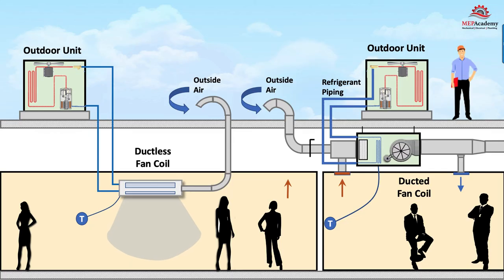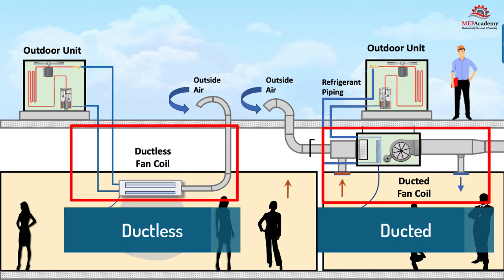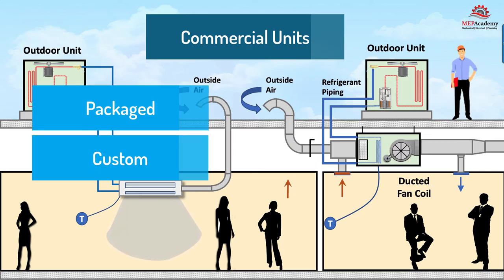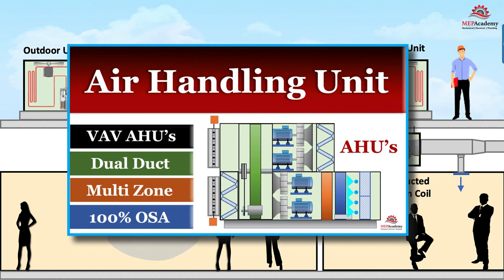The indoor unit can be ducted or ductless. Residential systems are relatively simple and smaller, while the commercial versions can be very large and have many other options installed within their housing. Commercial air handlers can be packaged, custom made, or built up with individual components selected and field erected. See our other video on air handling units for a better understanding.